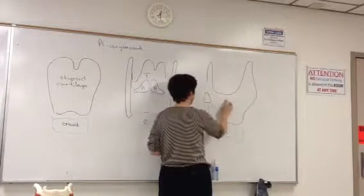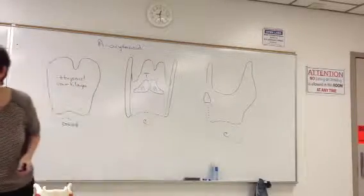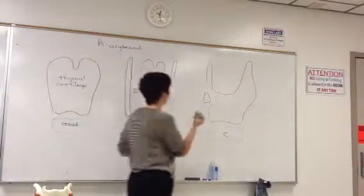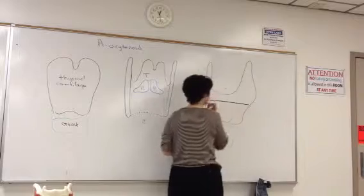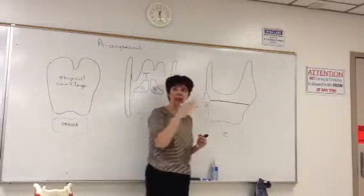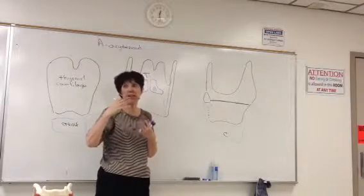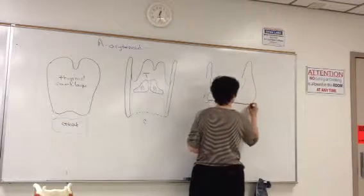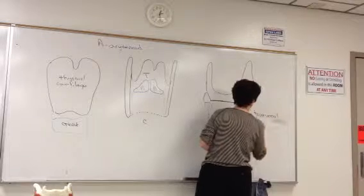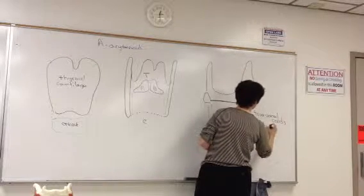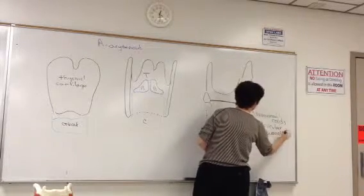Vocal cords occur as a pair, and we have two sets: the true vocal cords and the false vocal cords. The more inferior set are the true vocal cords, and these vibrate to create noise when you speak or cry. It's their vibration that creates the vocal noise. These are identified as true vocal cords, also known as ventricular ligaments.